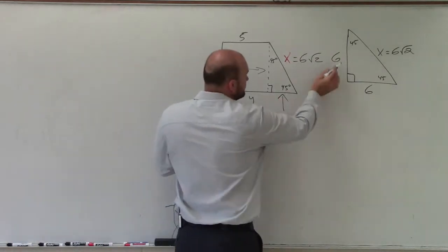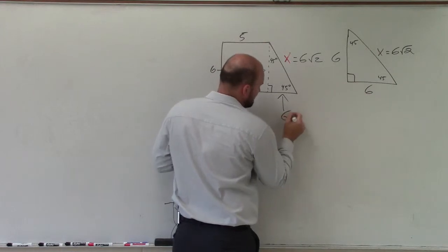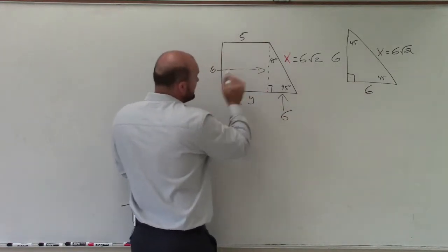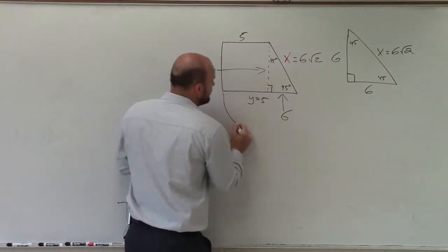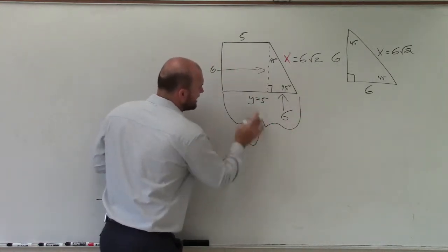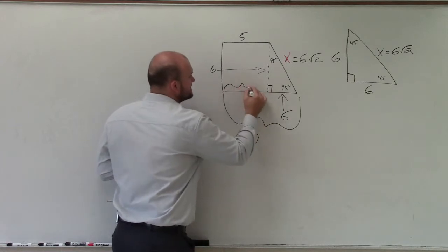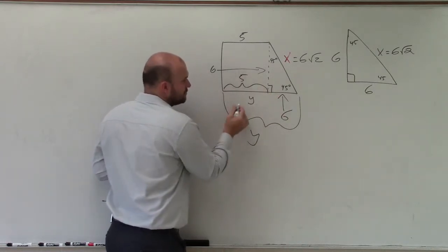Well, since this is 6 and that's 6, then we know that length is 6. And the distance from here to here is equal to 5. So therefore, the total distance, which is our y. I'm sorry, this distance from there to there is 5. That's not what equals y.